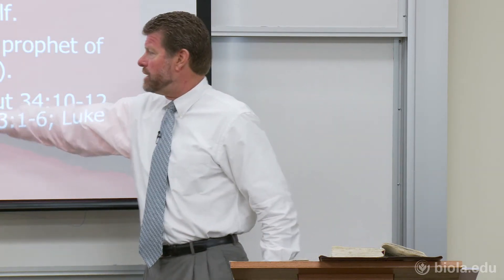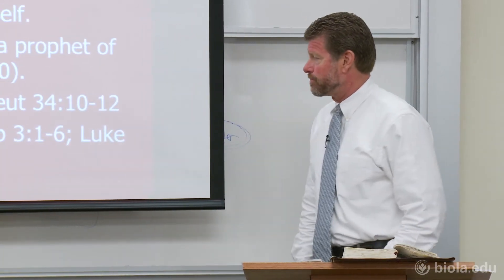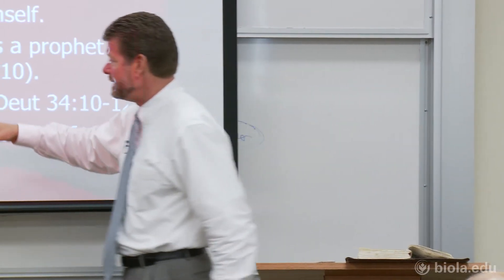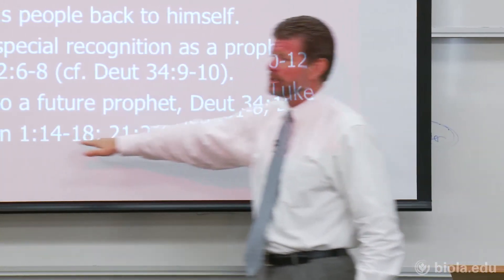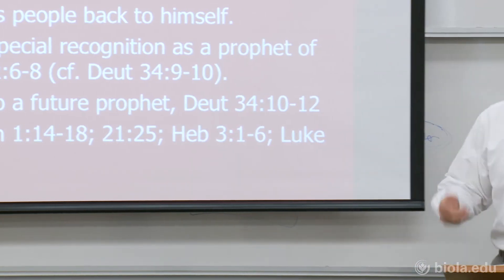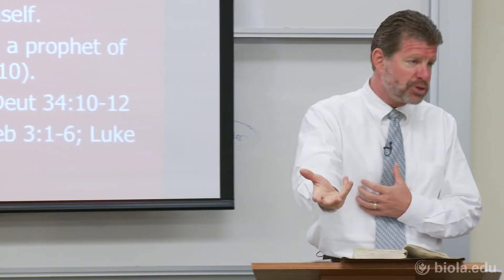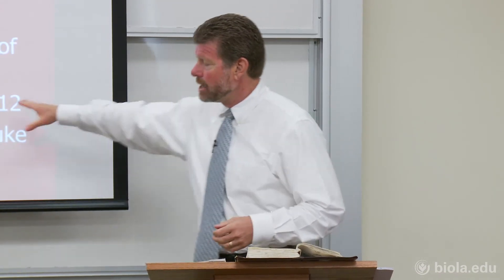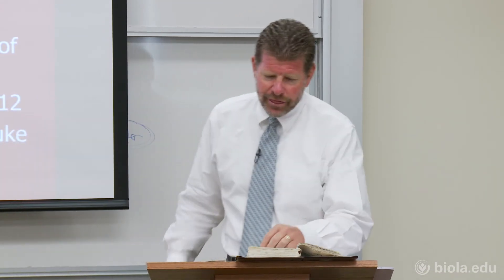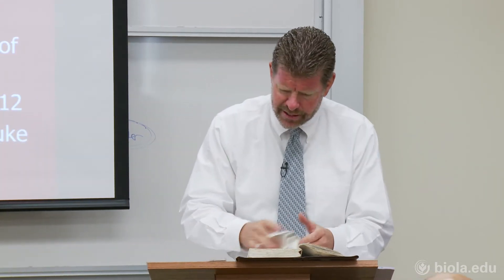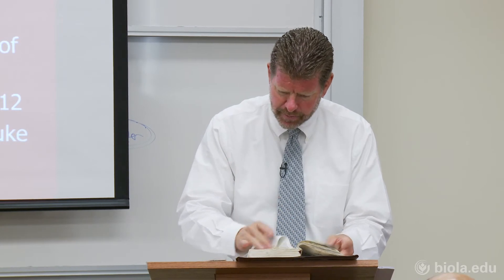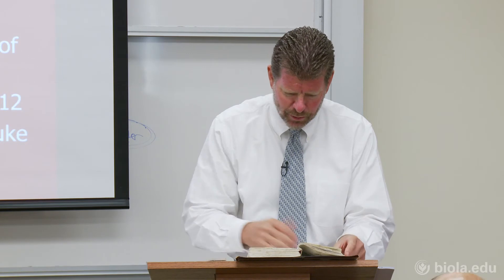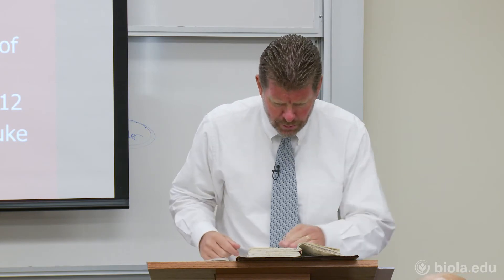Moses pointed to a future prophet. And then ultimately at the end we see this very much as Jesus — John the Baptist is the forerunner to this prophet who is coming. Jesus is the one who fulfills this. But look at Deuteronomy 34 verses 10 through 12, and also Deuteronomy 18 which already brought that out as well.